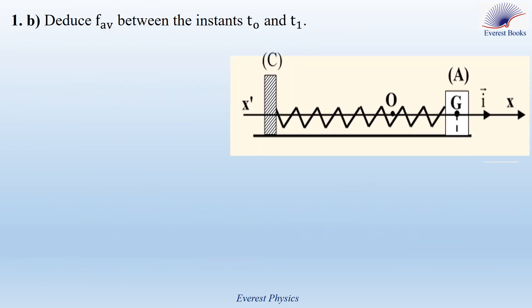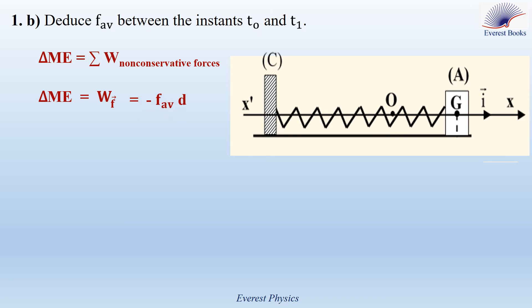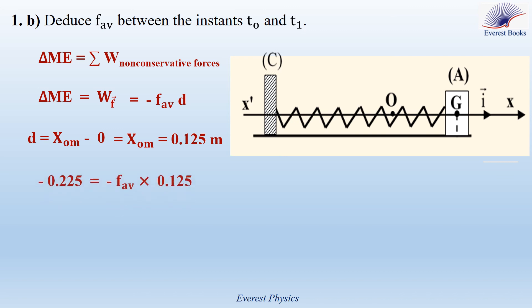Part 1b: calculate the average friction force between T0 and T1. Using the work-energy theorem: delta ME equals the work done by the friction force, which equals minus F_av times distance D. The distance traveled by G between T0 and T1 is x0m equals 0.125 meters. With delta ME equals minus 0.225 joules and D equals 0.125 meters, F_av equals 1.80 newtons.